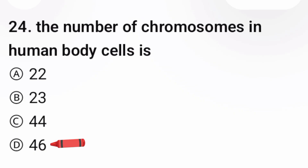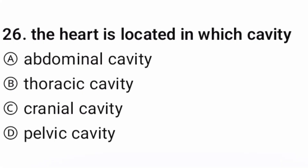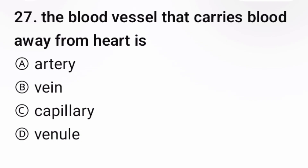Question 25: The organ that filters blood is — the correct option is B, kidney. Question 26: The heart is located in which cavity? The correct option is B. Question 27: The blood vessel that carries blood away from the heart is —